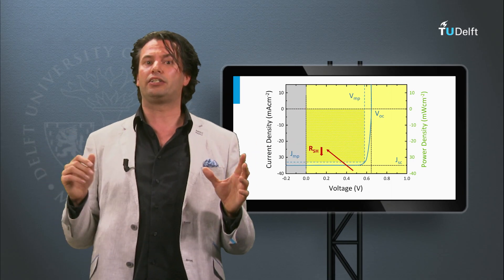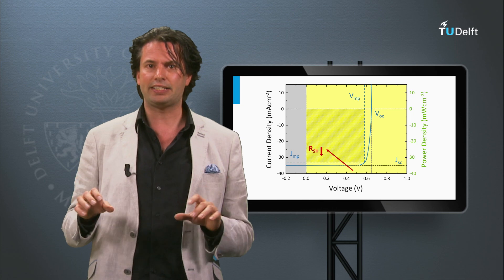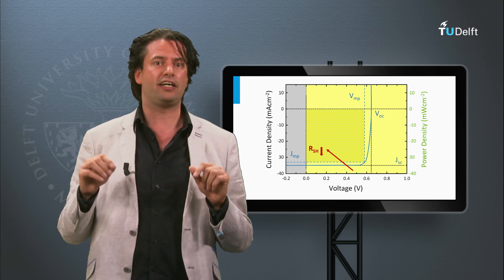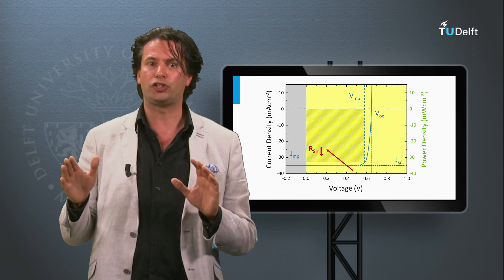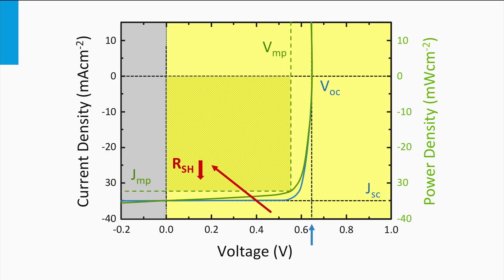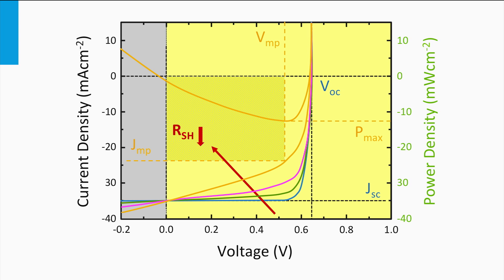Let's start again with the J-V curve of an ideal p-n junction. This means that the shunt resistance is infinitely large. Now we are going to decrease the shunt resistance. As you can see, the slope at the short circuit current density point starts to become more positive. The maximum power point and fill factor is affected as well. The smaller the shunt resistance, the smaller the fill factor will be.